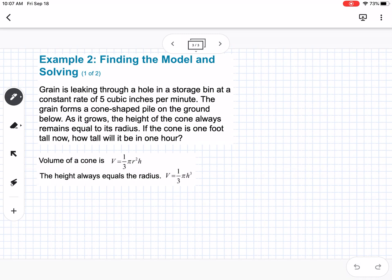So the next one says, grain is leaking through a hole in a storage bin at a constant rate of 5 cubic inches per minute. The grain forms a cone-shaped pile on the ground below. As it grows, the height of the cone always remains equal to its radius. If the cone is 1 foot tall now, how tall will it be in 1 hour? So I included here the volume of a cone formula, and the height is always equal to the radius.